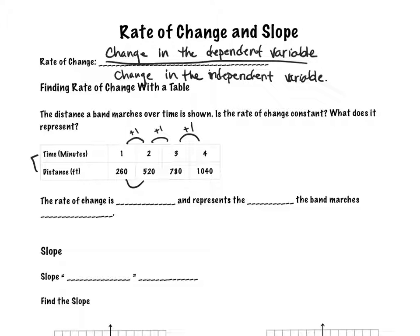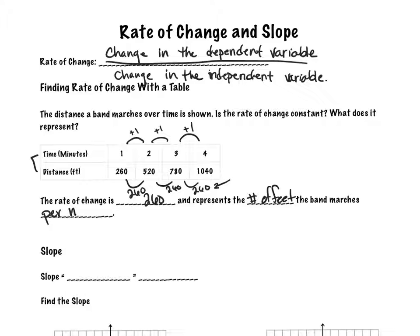I want to find the difference between 260 and 520, so 520 minus 260 gives 260. Then 780 minus 520 gives 260 again, and 1040 minus 780 also gives 260. Because all of these differences are the same, the rate of change is constant at 260 — representing the number of feet the band marches per minute of their performance.